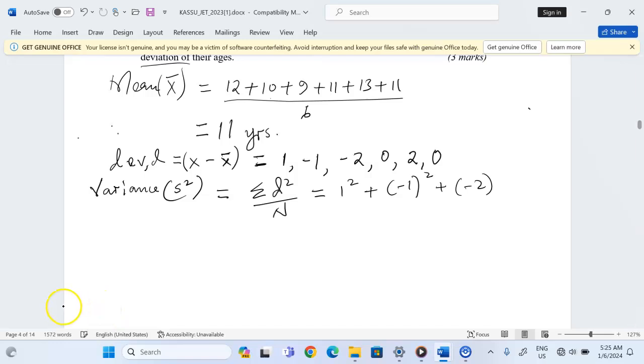Plus negative 2 squared plus zero squared plus 2 squared plus zero squared, divided by six pupils. The mean of all deviations squared—the average of deviations squared—gives us the variance.